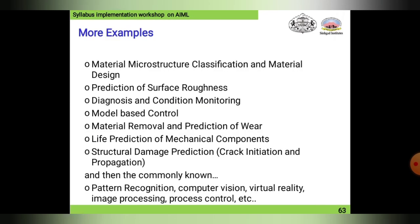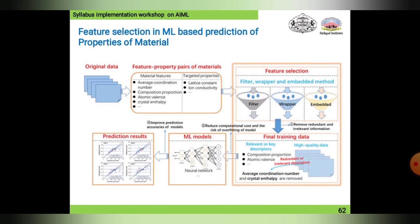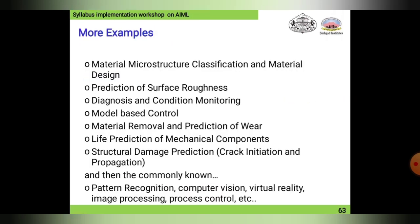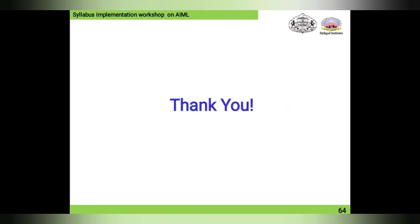Further examples include: prediction of surface roughness, model-based control, diagnosis and condition monitoring, material removal, and life prediction of mechanical components. These are general examples that use feature selection and machine learning-based prediction of properties of materials. Thank you.